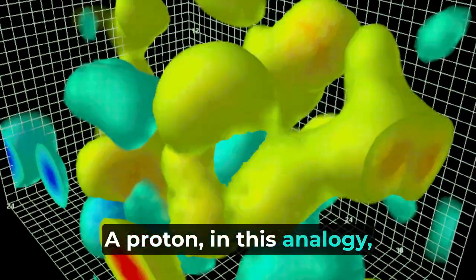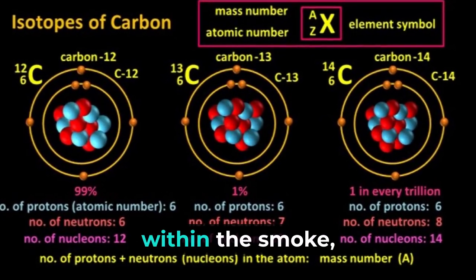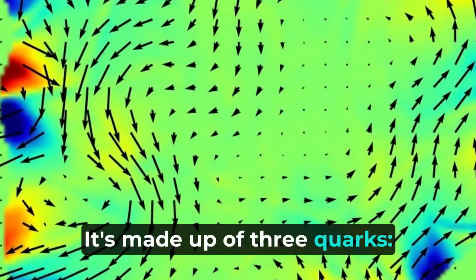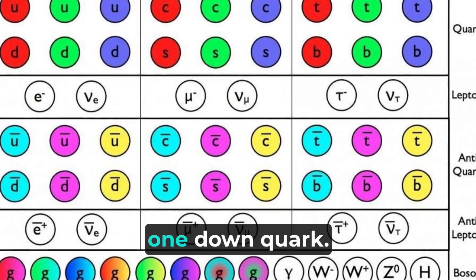A proton, in this analogy, is like a complex swirl within the smoke, created by the underlying quark field. It's made up of three quarks, two up quarks and one down quark.